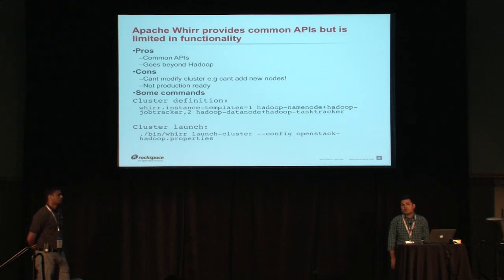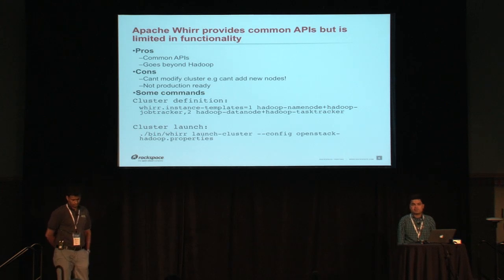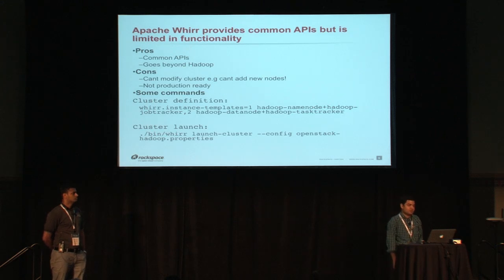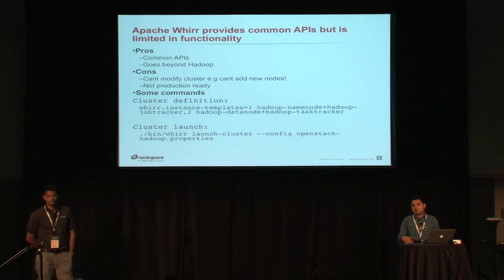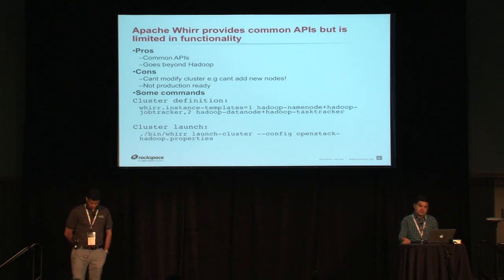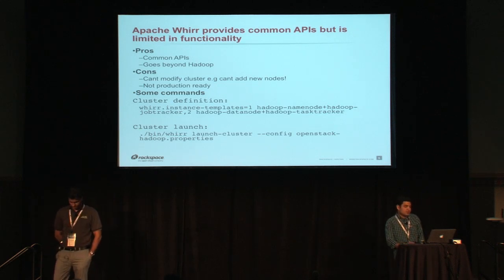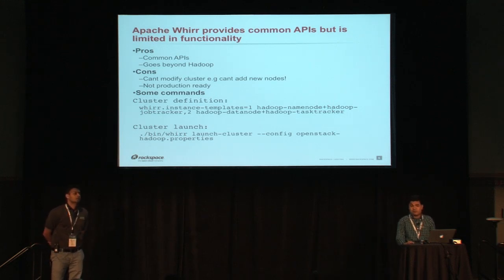If you want to do Hadoop on cloud, you probably want to go through installation first. Since it's a distributed file system with many components across different servers, you'll probably want to use a provisioning software. If you do a quick Google search, you'll likely come up with Apache Whirr — it's an Apache project that started with Amazon deploying Hadoop on Amazon EC2. Since it uses the jClouds API, it supports a lot of different clouds including OpenStack. It is easy to use, with a common API for different clouds, but it's pretty limited in functionality.